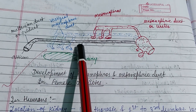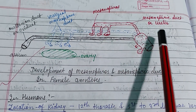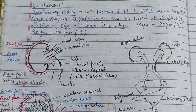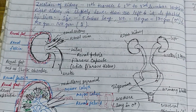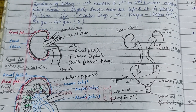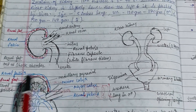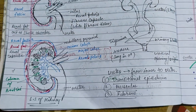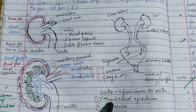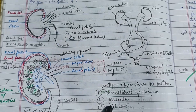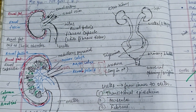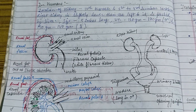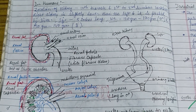In humans, the location of the kidney is at the 12th thoracic and 1st to 3rd lumbar vertebrae. The right kidney is slightly lower than the left, being pushed down by the liver. The human kidney is shown in longitudinal section. The ureter wall, from inner to outer, consists of transitional epithelium, muscular layer, and fibrous epithelium — three types of epithelium. That covers all about the vertebrate kidney; keep watching, thank you.